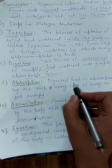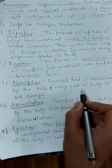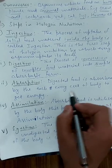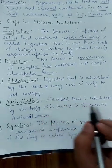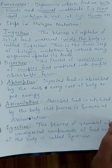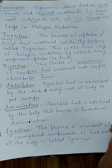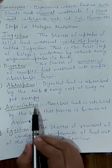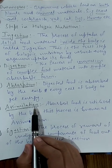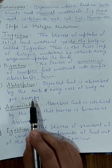The third step is absorption. Digested food is absorbed by each and every cell of the body to get energy. All the effort put into digestion is so that the digested food can be absorbed and used by the body.